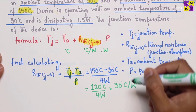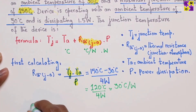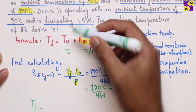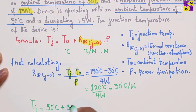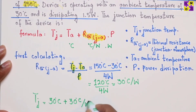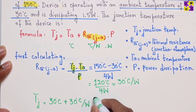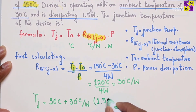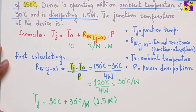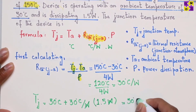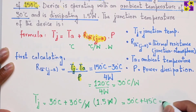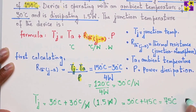Now we plug this into the junction temperature equation: T_J = T_A + (thermal resistance × P). The ambient temperature is 30°C, thermal resistance is 30°C/W, and the operating power dissipation is 1.5 watts. The watts cancel out, giving us 30°C + (30 × 1.5) = 30°C + 45°C = 75 degrees centigrade.